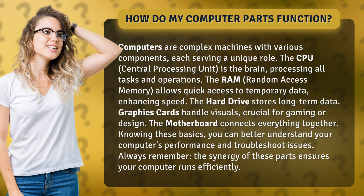The CPU is the brain, processing all tasks and operations. The RAM allows quick access to temporary data, enhancing speed. The hard drive stores long-term data.